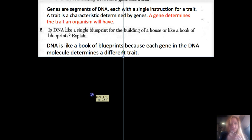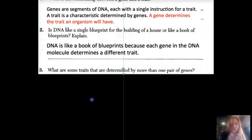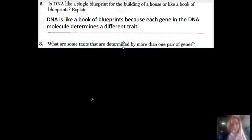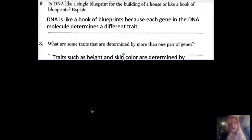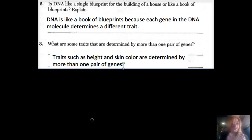Number three: What are some traits that are determined by more than one pair of genes? Traits such as height and skin color are determined by more than one pair of genes.